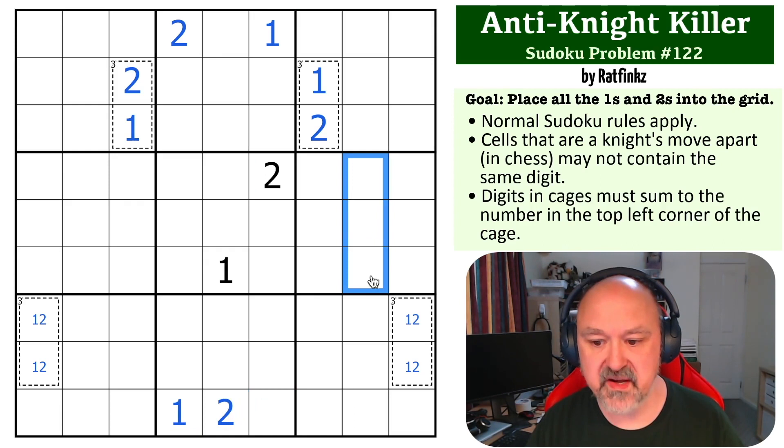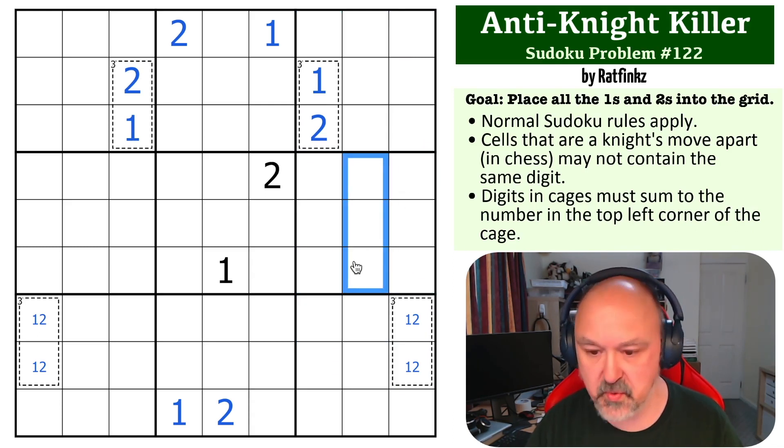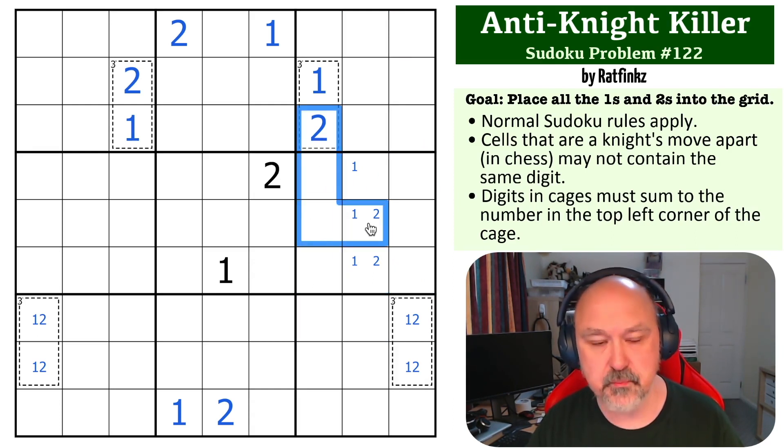Okay, so where do we go now? Well, we now can tell that in these columns we cannot put a one and two in there, and we put a one and two in there. So the one and the two has to go into those, but this cannot be a two and this sees that two by the knight's move shape, so that's not the two. This is the two. This one sees that one by the knight's move shape, so that's not the one and this is the one.